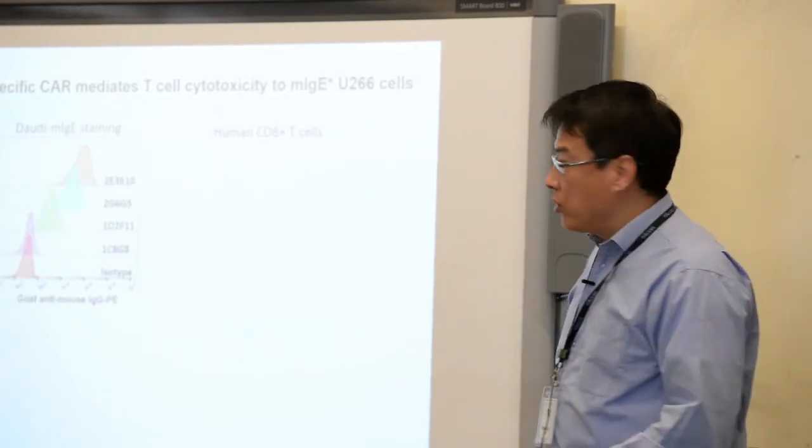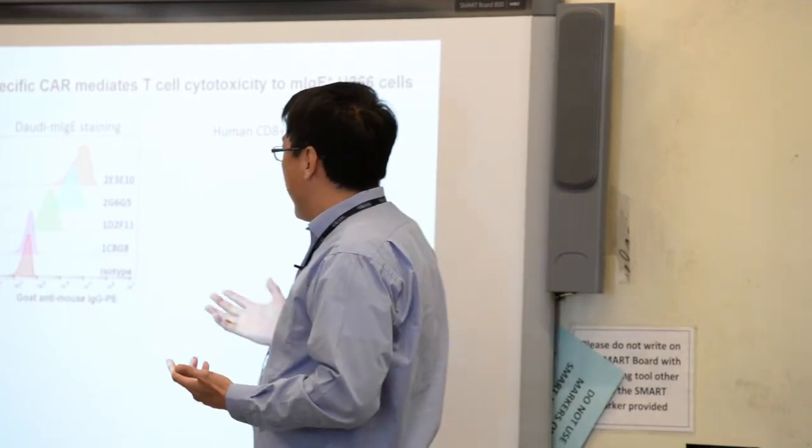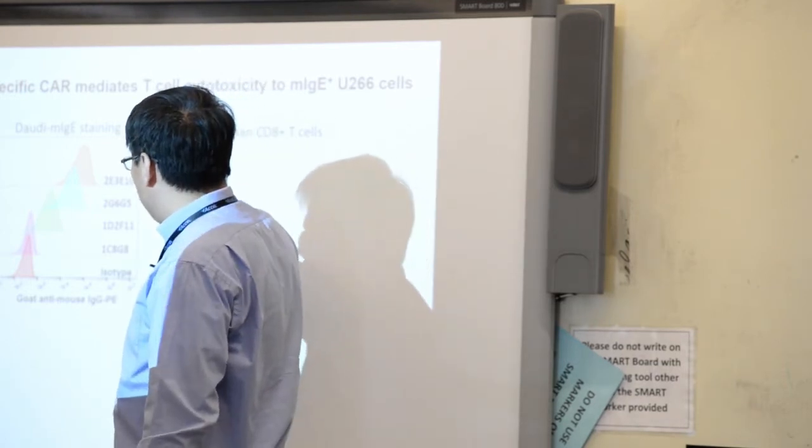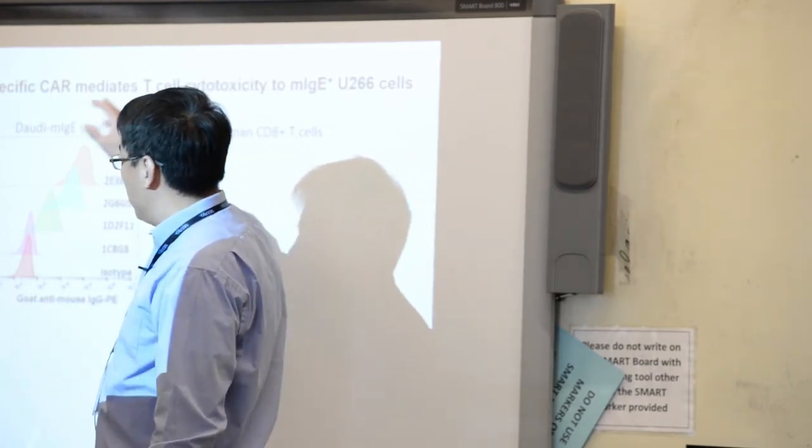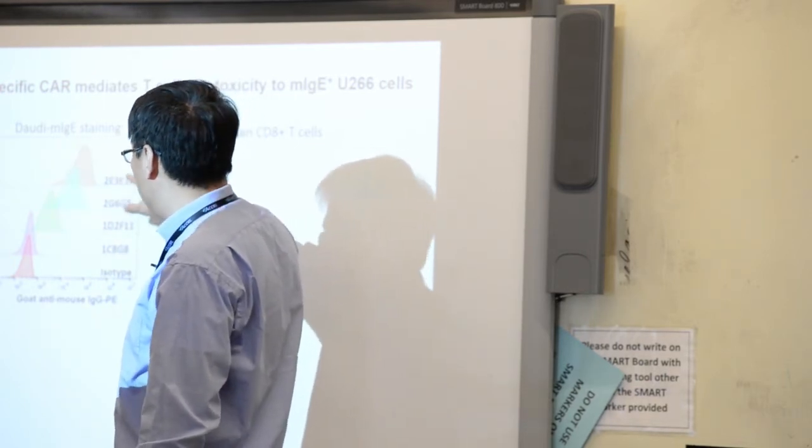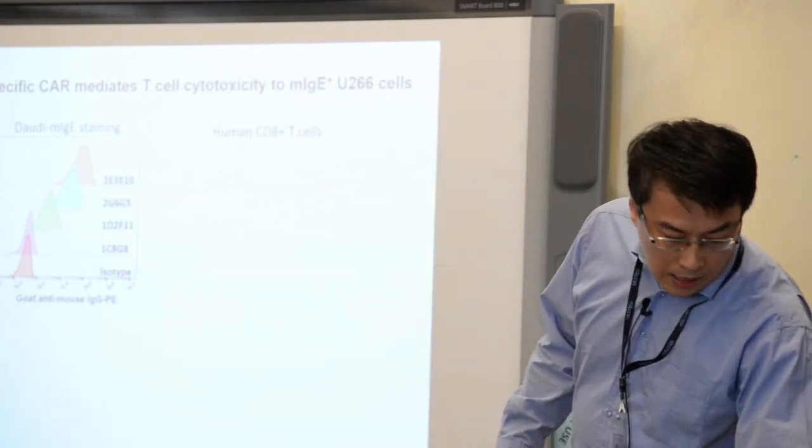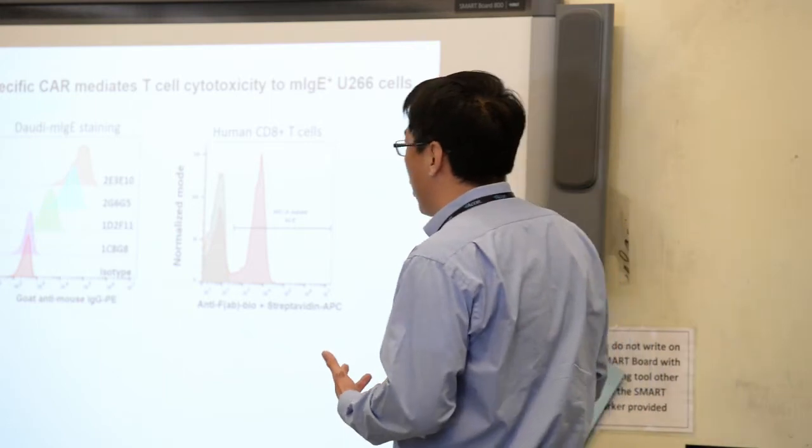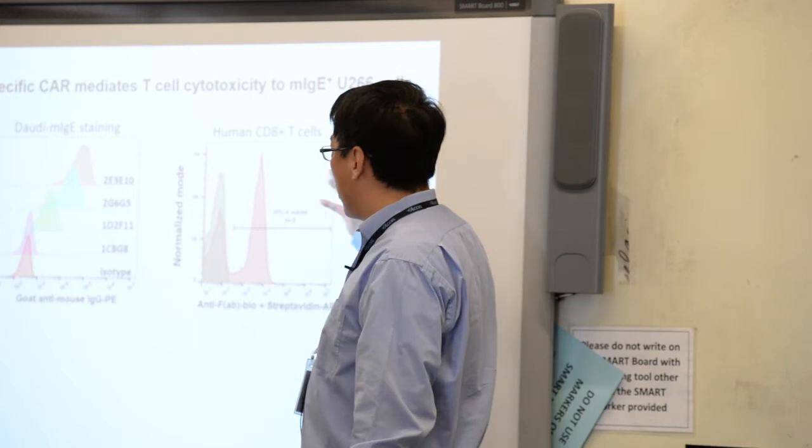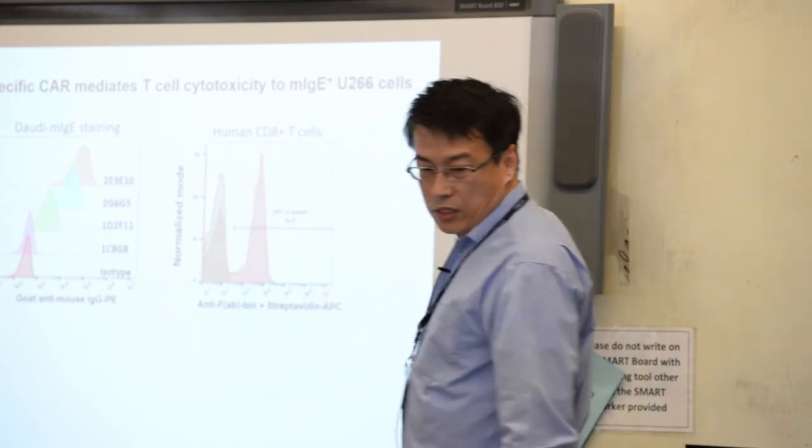Let's look at the first strategy, EMPD-specific CAR. We developed a number of antibodies to recognize that domain, about 54 amino acids. We used the antibody to stain a cell that expresses membrane IgE. As you can see, they bind to the cells at different levels. Naturally we picked the one that bound the best. We cloned the variable region, made the CAR construct, and made lentiviral vectors to express the CARs on human CD8 T cells. As you can see, they're expressed at a pretty decent level.